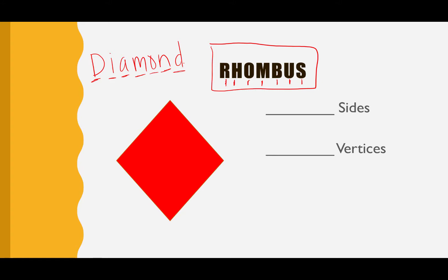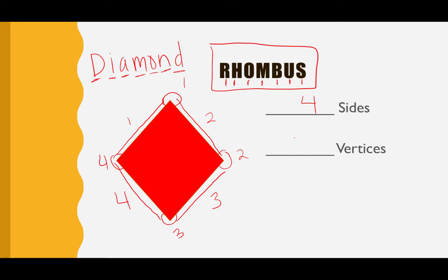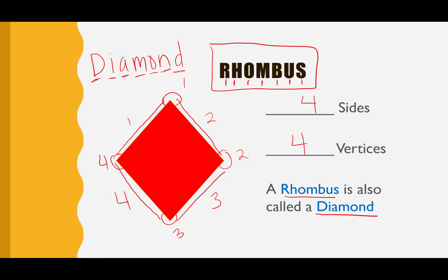Let's count how many sides and how many vertices our rhombus or diamond has: one, two, three, four sides. And one, two, three, four vertices. So a rhombus is also called a diamond, and this is a special shape because it's turned so that the points are going up and down and left and right. If you turned a square this way, it would look like a diamond or a rhombus.